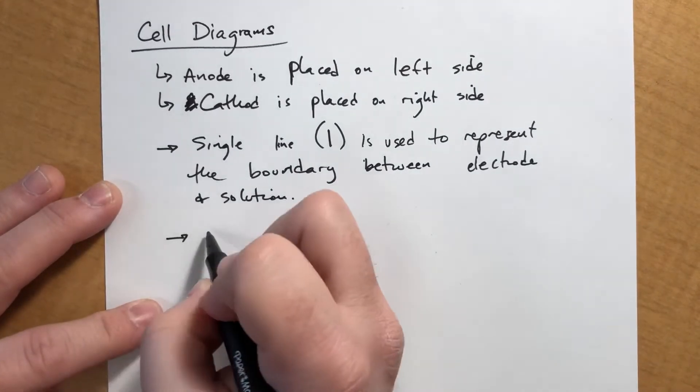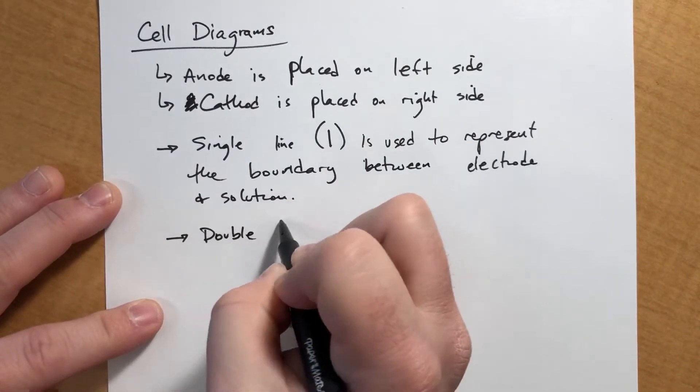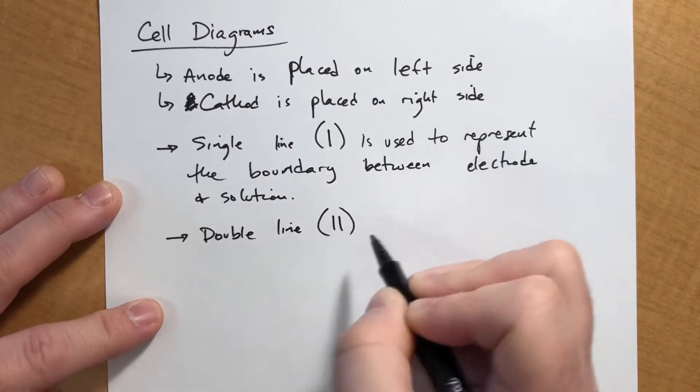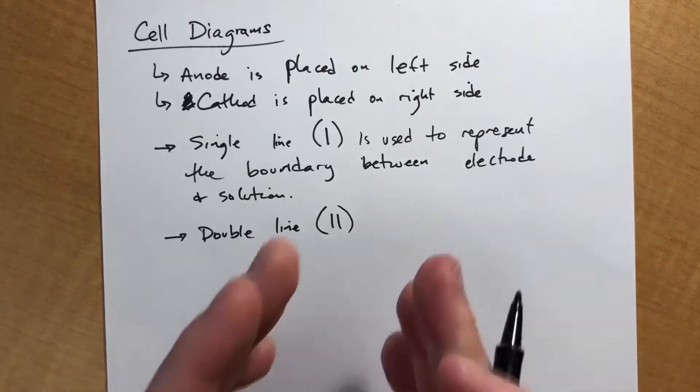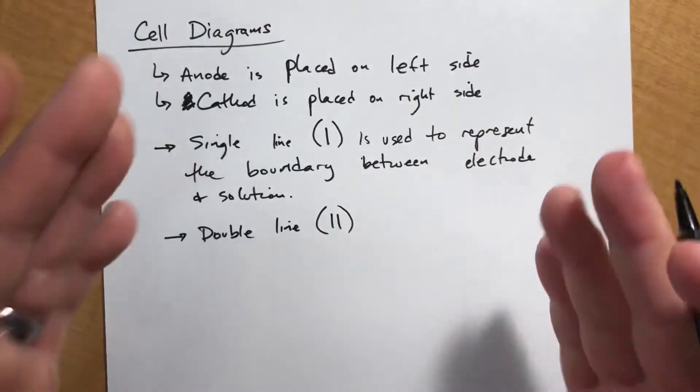We use a double line, which is used to represent the salt bridge that separates the two half-reactions.